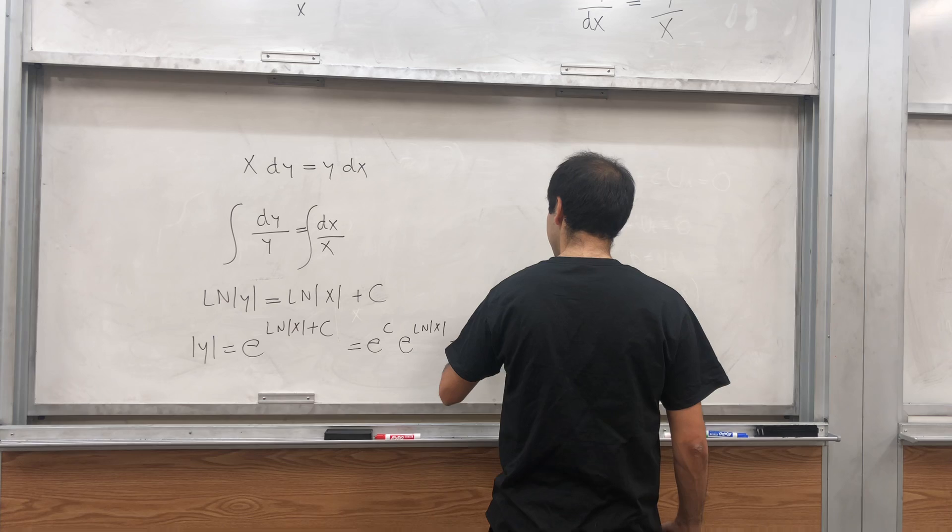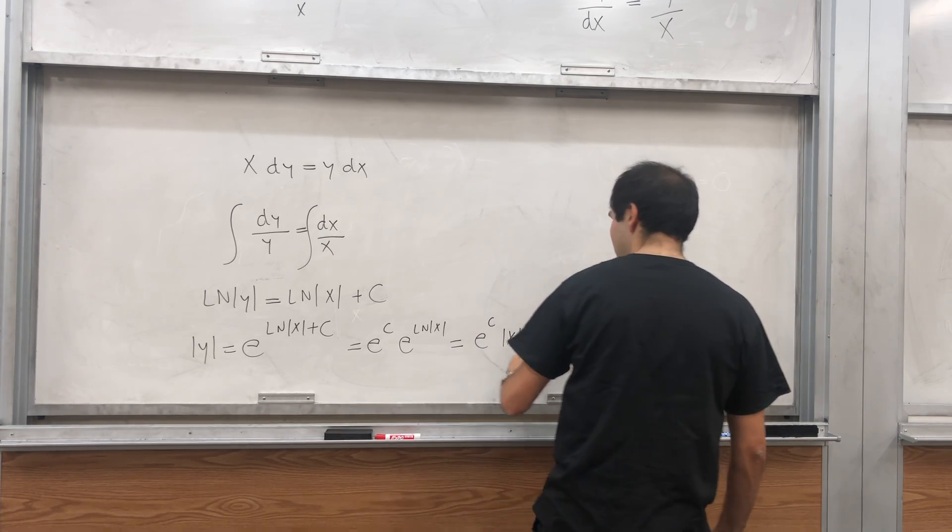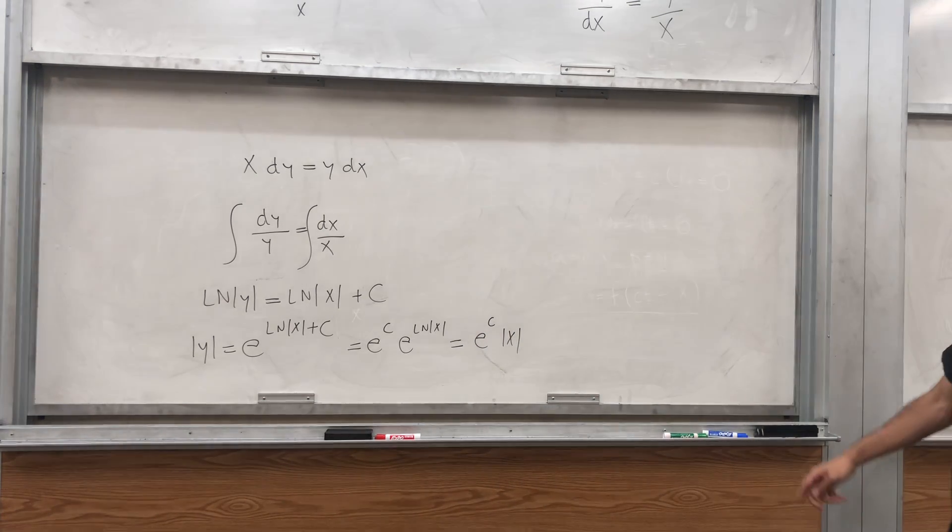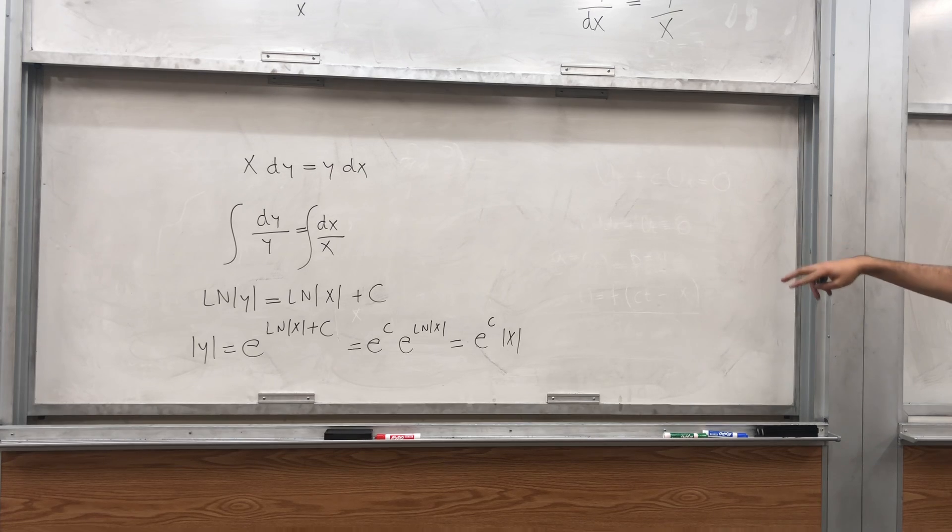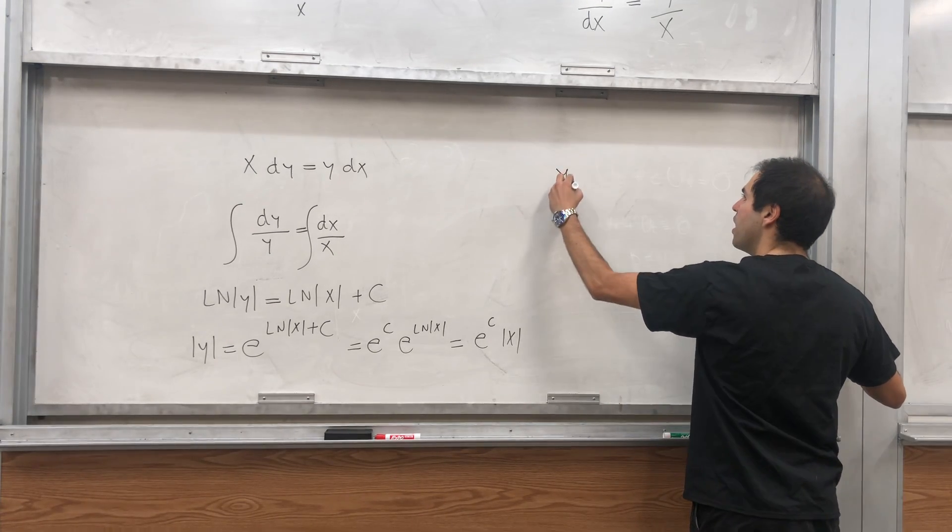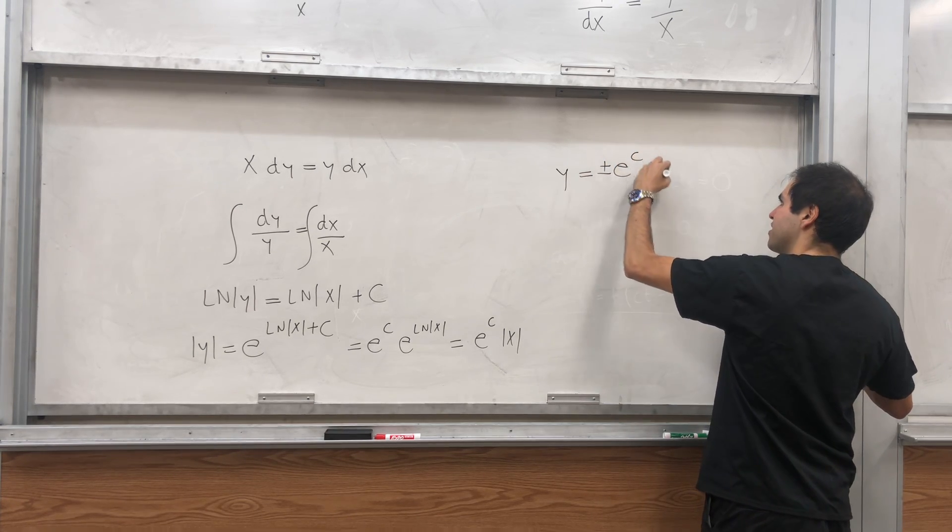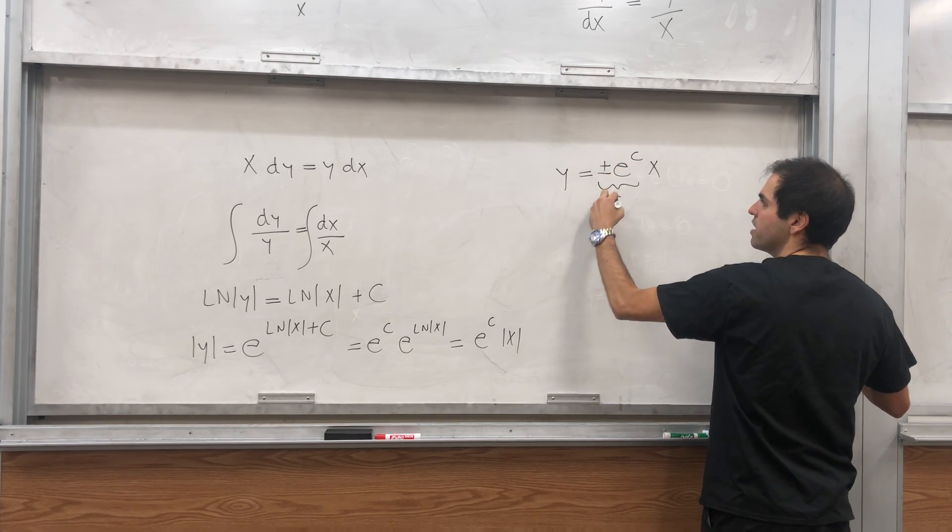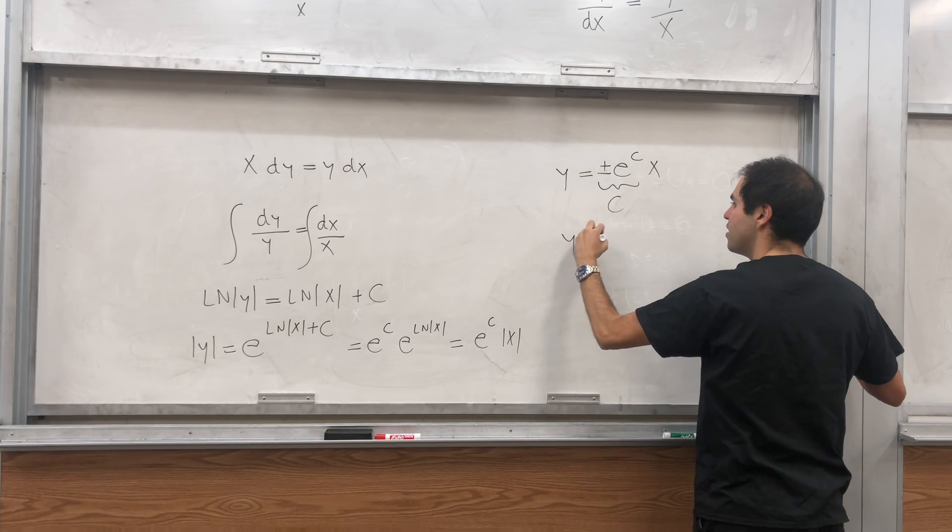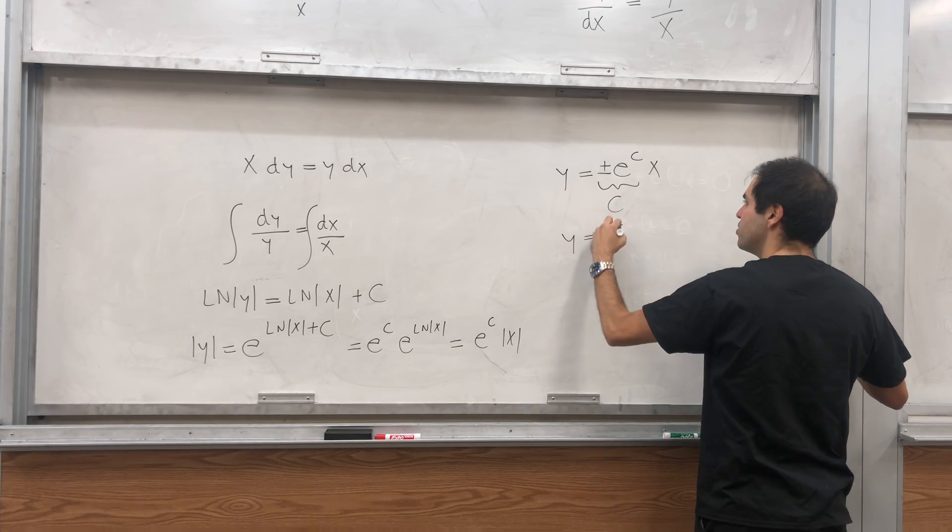And that's e to the c times absolute value of x. And then what we get is absolute value of y equals e to the c absolute value of x. So y equals plus or minus e to the c x. And again, we can rename this constant, why not? So y equals cx.